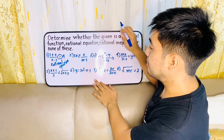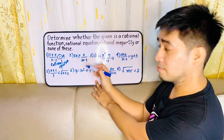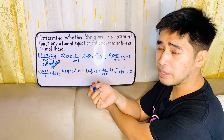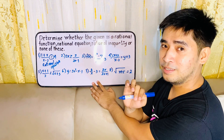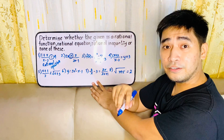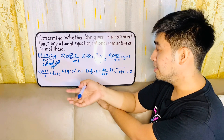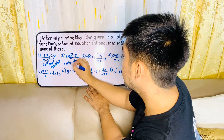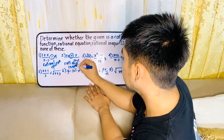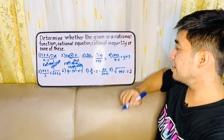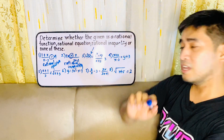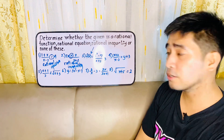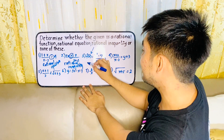For the second one, we are given 5x is greater than or equal to 2 over 2x minus 1. Tatanungin mo ulit — may iba bang variable? May y ba? May f(x) ba? Wala. Therefore, it is not a rational function. Dahil meron tayong given na greater than or equal to, we could finally say that this is a rational inequality — walang root sign o radical. For the third one, kitang-kita mo agad there is f(x). Check mo — meron bang radical? Meron bang root sign? Kung walang radical or root sign, therefore we could finally say that this is a rational function.